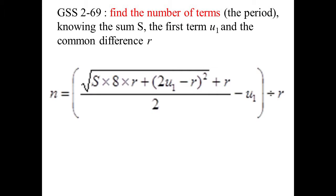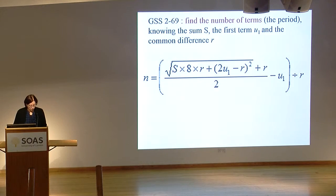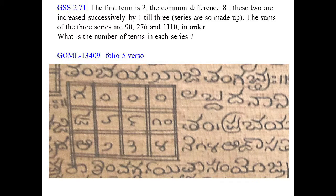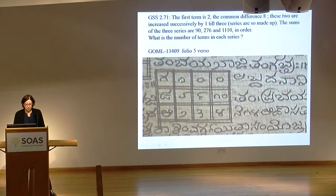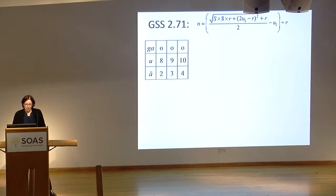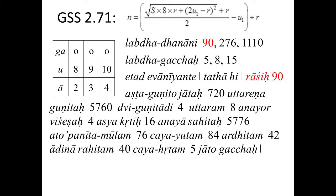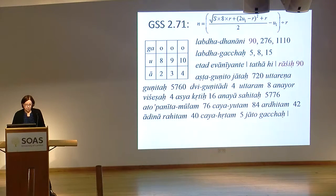We also get sample problems where we have to find the number of terms. The formula we would use today follows an algorithmic presentation. In the manuscript, when one of the three values is unknown, a zero is put there, because we don't know the value of the gacha — that is the one we have to find. If we know the total sum, like 90 here, you follow the algorithm, multiply by eight and again by eight, etc., and finally get the answer.